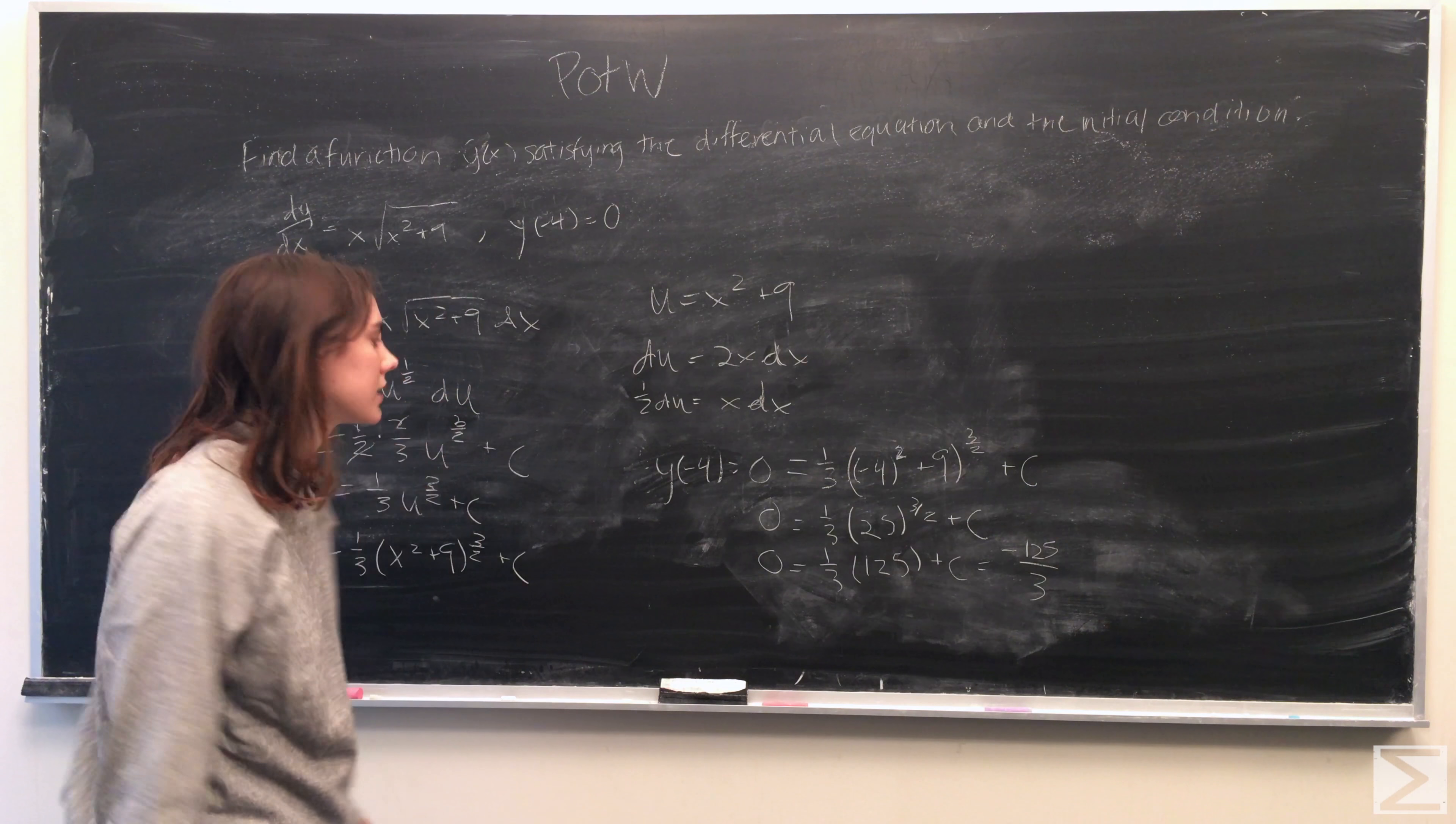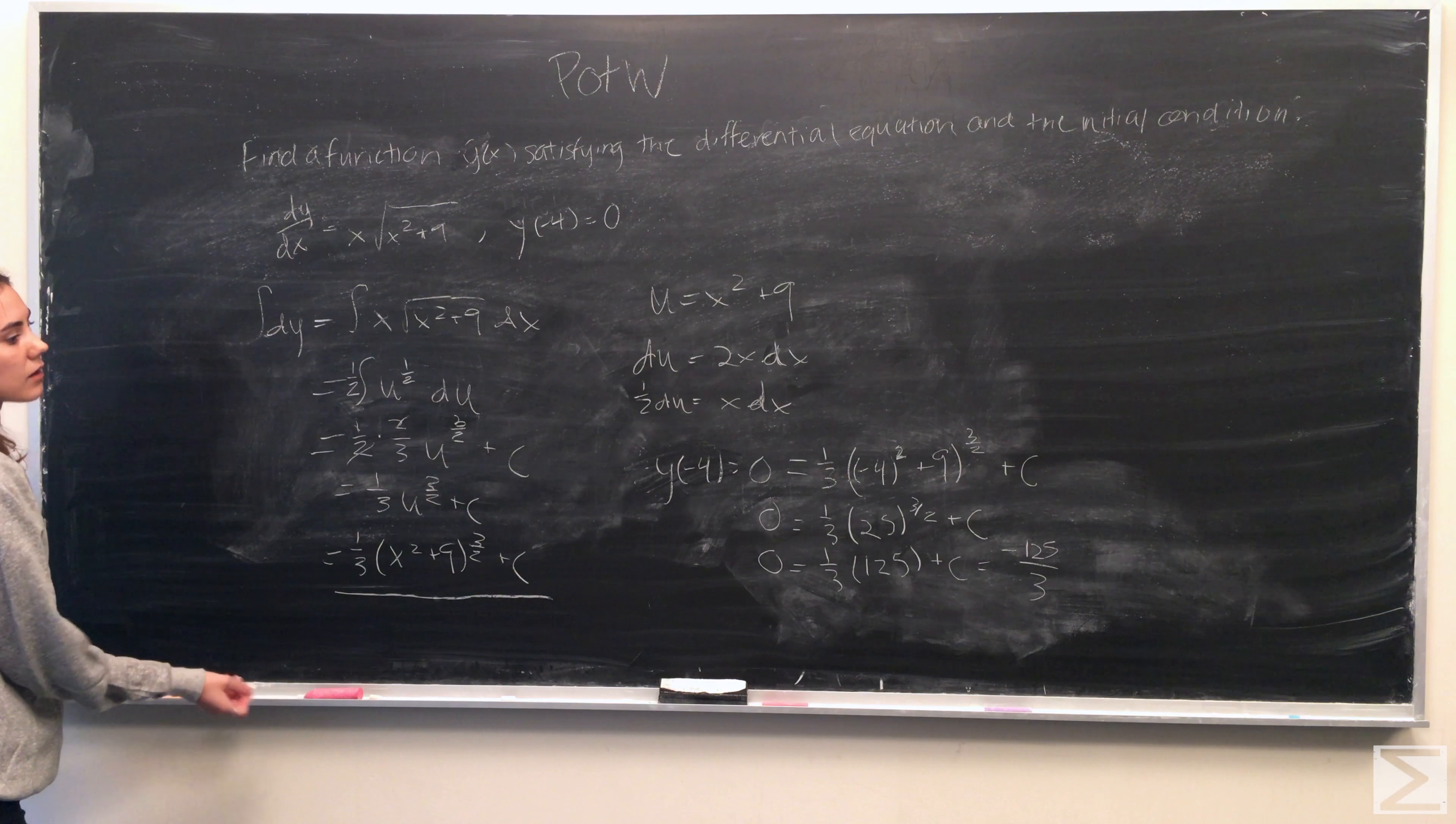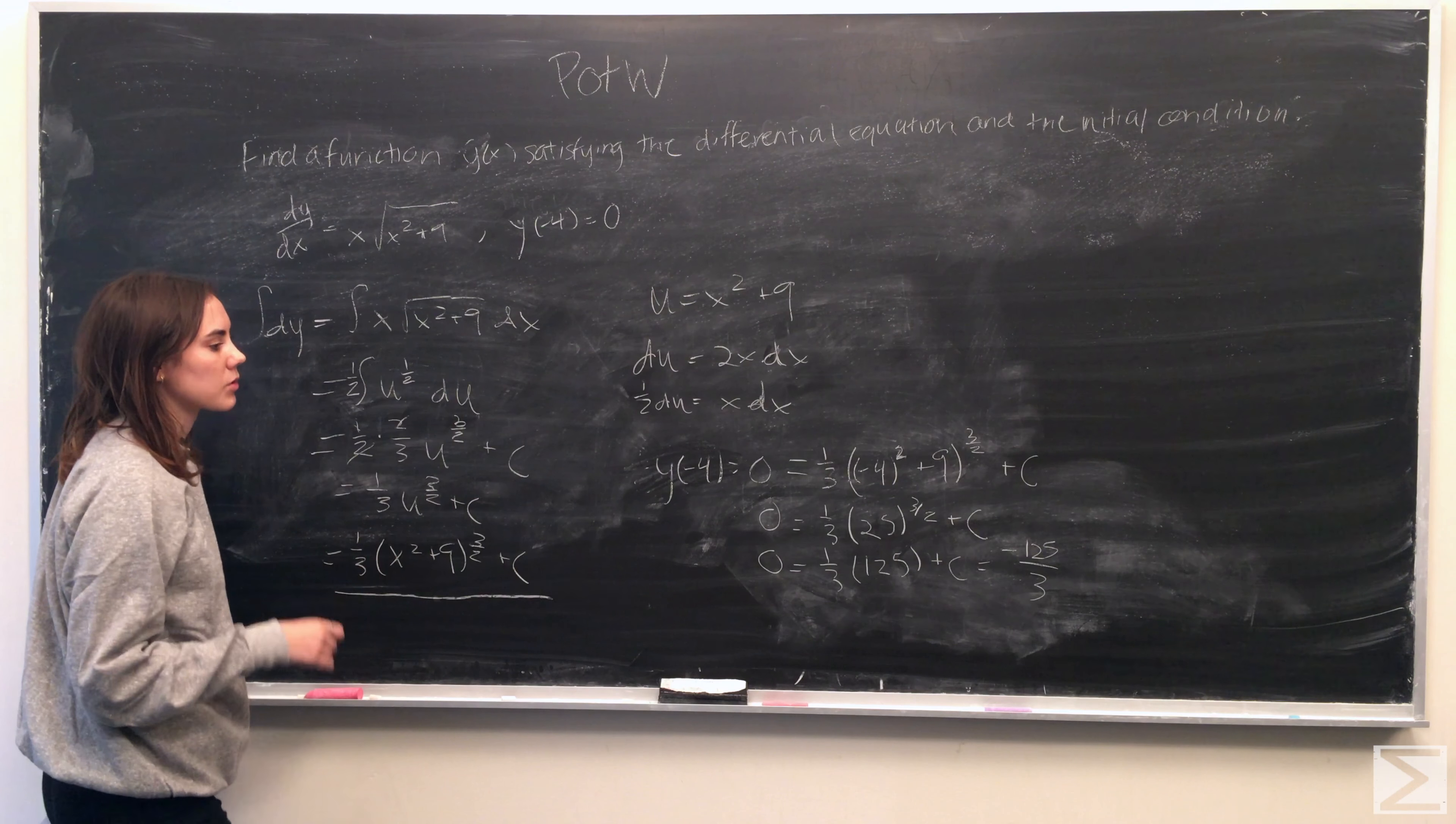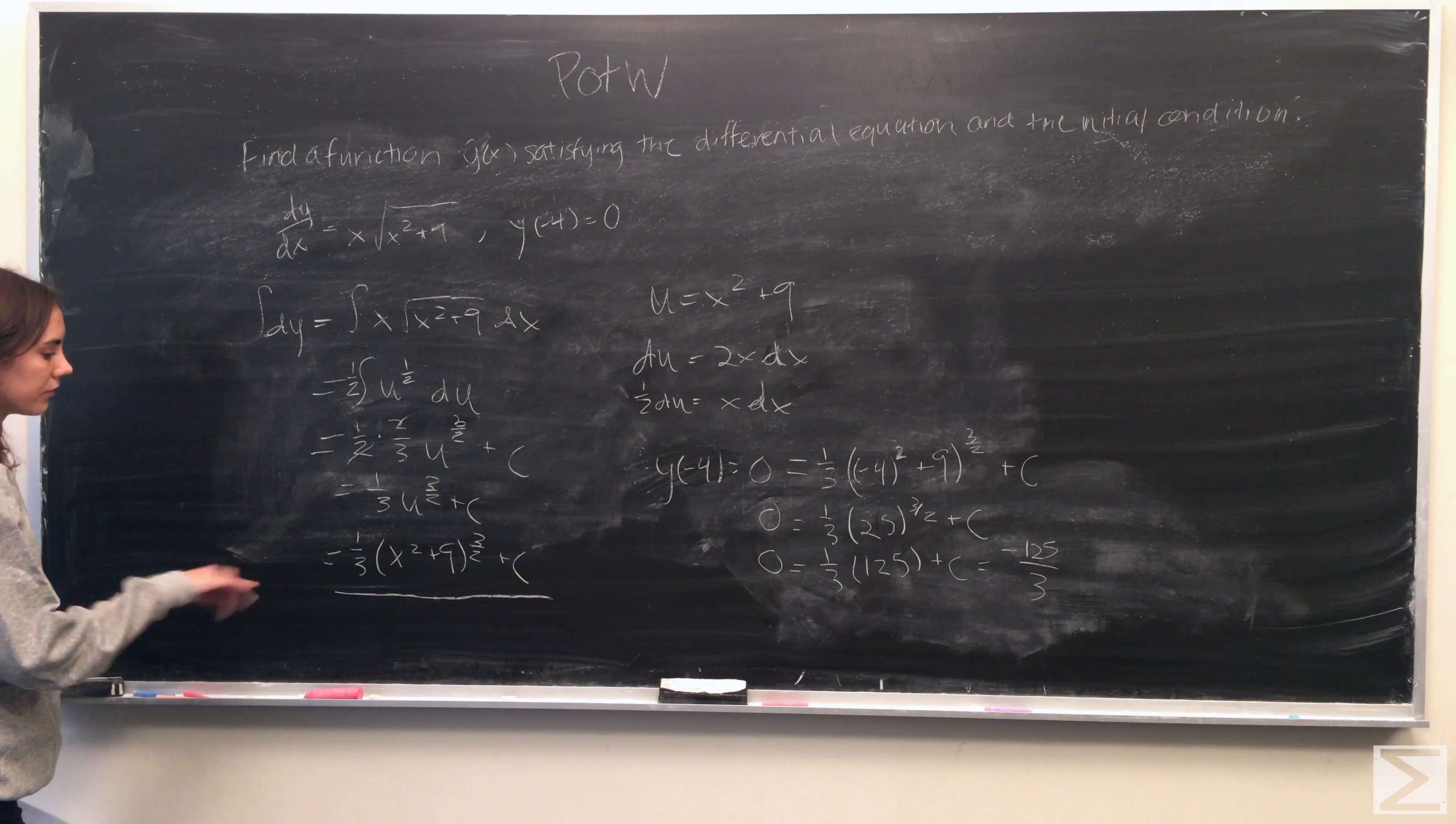And what you'll notice is here where we solve the integral, there's already a 1 third pulled out. So what we can do is where we're actually going to add in that 1 third is just pull the 1 third out of negative 125 over 3 to the outside of the full terms.